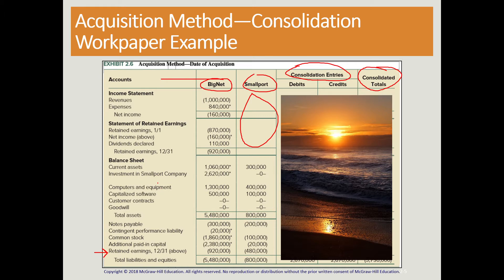The asterisks indicate accounts that have changed from the original figures provided at year end. Expenses have increased due to the journal entry associated with the purchase — the professional fees, which were paid in cash, also affecting our cash balance. We have the journal entry debiting investment in Small Port for the acquisition price — the consideration transferred — which we can see in the balance sheet. We also have the contingent liability, common stock increased due to the issuance of 26,000 shares, and the additional paid-in capital.